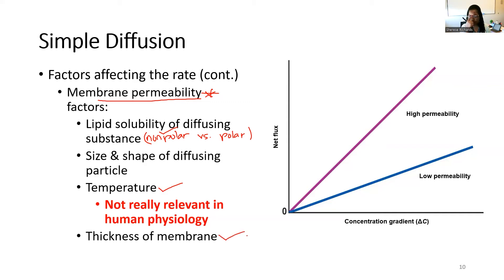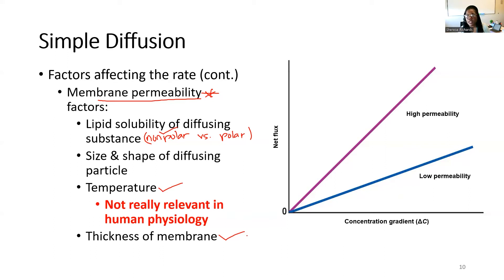The fourth factor affecting membrane permeability is the thickness of the membrane. If the membrane is thick, it will be harder for particles to get through — a longer journey and more of a block. This comes into play in clinical scenarios like pulmonary fibrosis, where thickening and scarring of the alveolar membrane means particles have a much harder time crossing compared to a thin membrane.